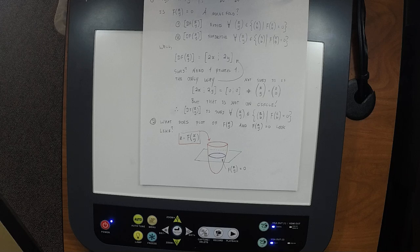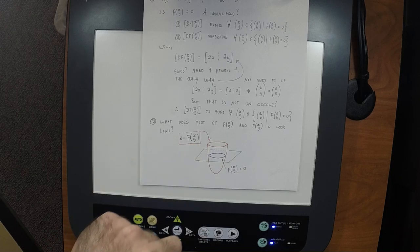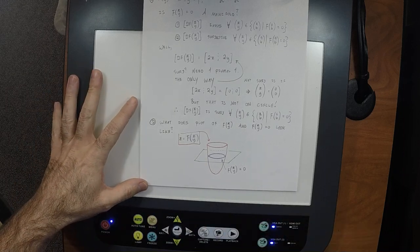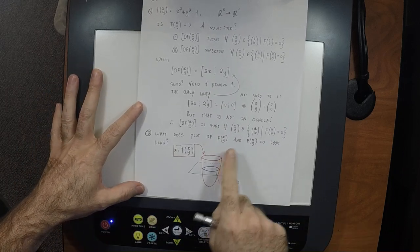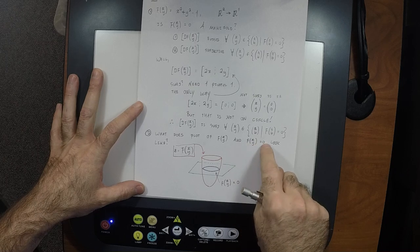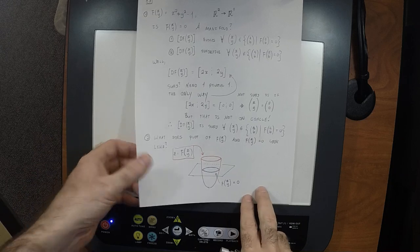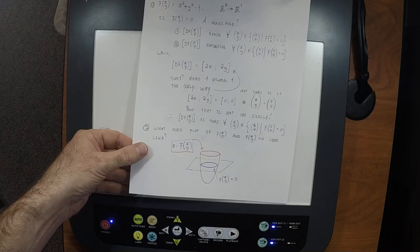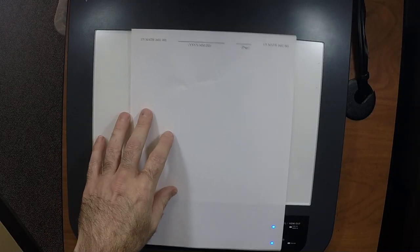Can we call the entire function of x and y a two-dimensional manifold? Yes, it's going to be a two-dimensional manifold. But right now what we're talking about is having a function and then making it satisfy some equations. We're convinced that the circle is a manifold.